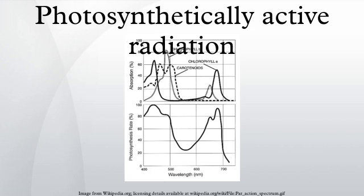This spectral region corresponds more or less with the range of light visible to the human eye. Photons at shorter wavelengths tend to be so energetic that they can be damaging to cells and tissues, but are mostly filtered out by the ozone layer in the stratosphere. Photons at longer wavelengths do not carry enough energy to allow photosynthesis to take place.